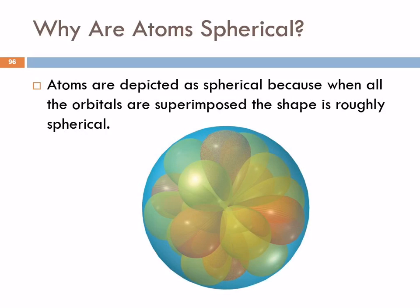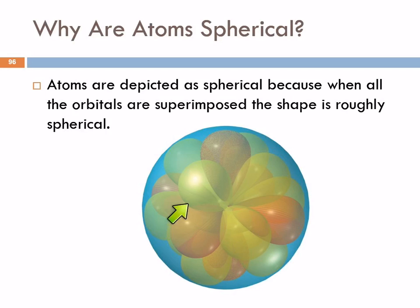Well, with all these wacky balloon shapes for the places where the electrons are likely to be, why do we think of atoms as being spherical? Because when you combine or superimpose all these different orbitals, it comes out to be a roughly spherical thing. We take all these different orbitals and they're all on top of each other, centered on the nucleus. And overall, it's a roughly spherical shape.